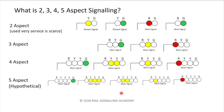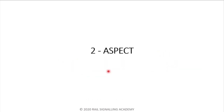In simple terms, when we say n-aspect signaling, it means the signal can convey n number of instructions or n different types of information. For a two-aspect signal, it can show either yellow or green — only two types of instruction. For three-aspect signals, you can show green, yellow, or red — three types of information. Same way with four aspect: four different types of information.